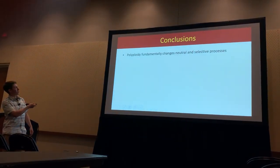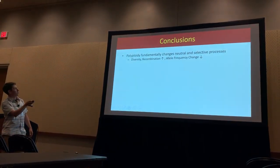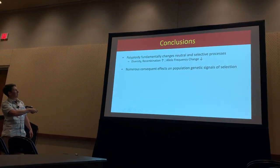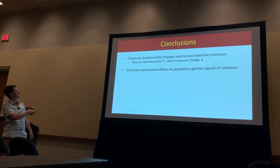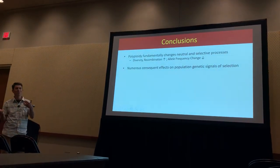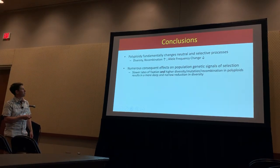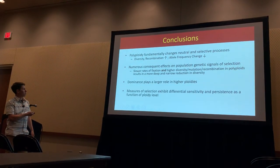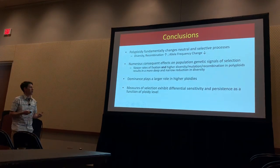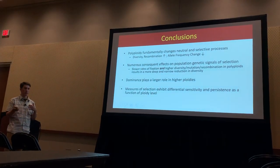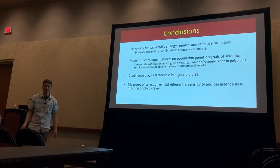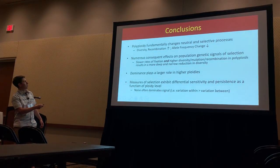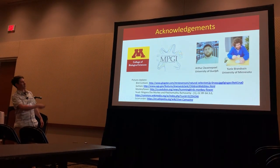In summary: polyploidy fundamentally changes neutral evolutionary processes — diversity is up, recombination is up. There are many consequent effects on population genetic signals. Dominance plays a bigger role in higher ploidies, and what metric you're using determines how long the signal will last after a selective sweep.